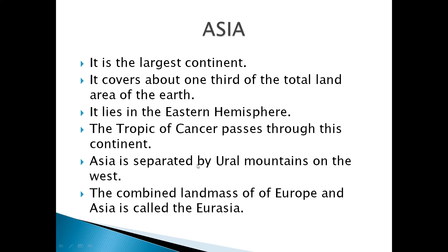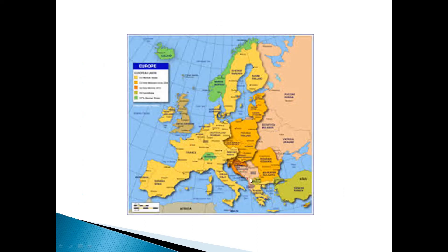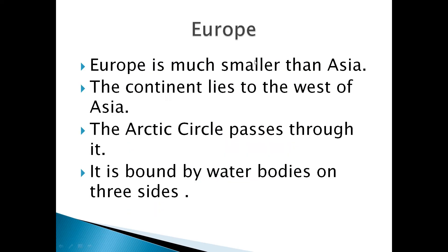Asia is separated by the Ural Mountains from Europe on the west. The combined landmass of Europe and Asia is called Eurasia. Europe is much smaller than Asia. The continent lies to the west of Asia, and the Arctic Circle passes through this continent. Europe is bound by water bodies on three sides: the Arctic Ocean to the north, the Atlantic Ocean to the west, and the Mediterranean Sea to the south.